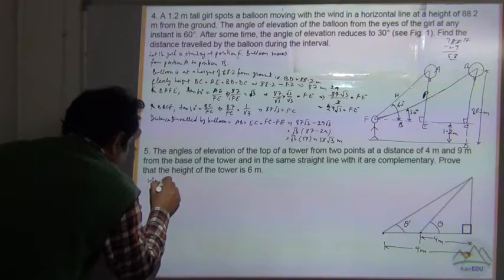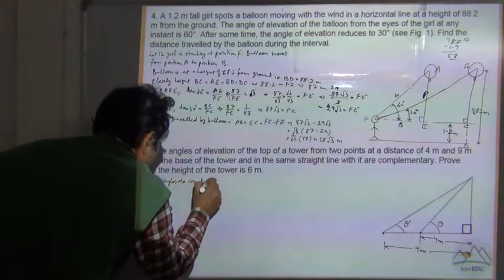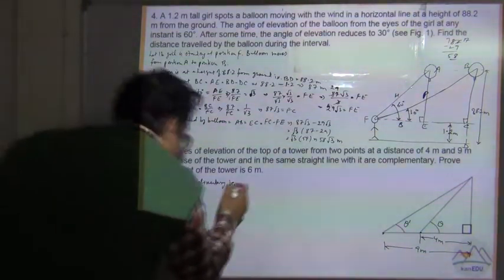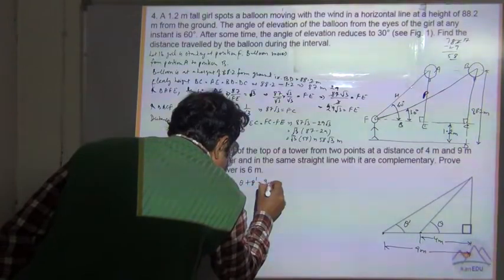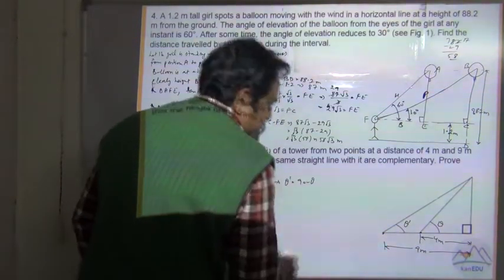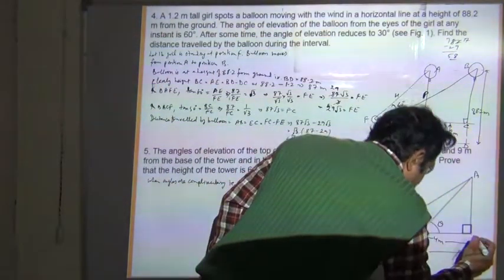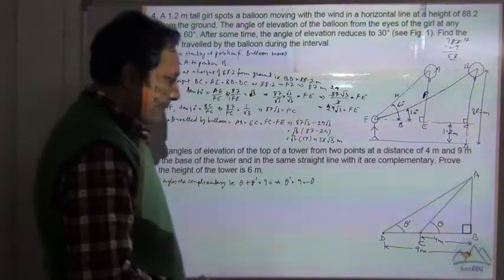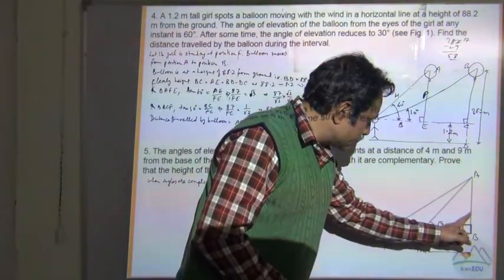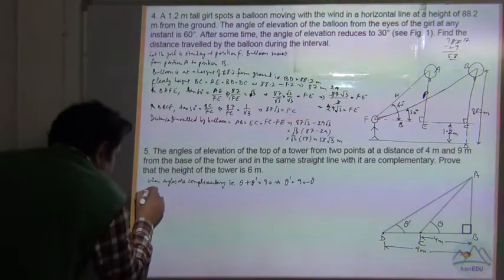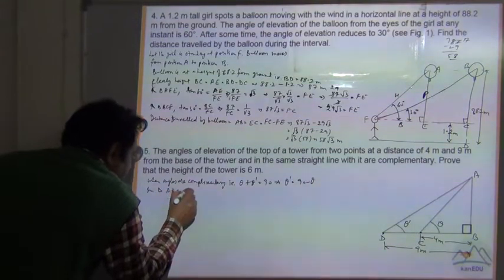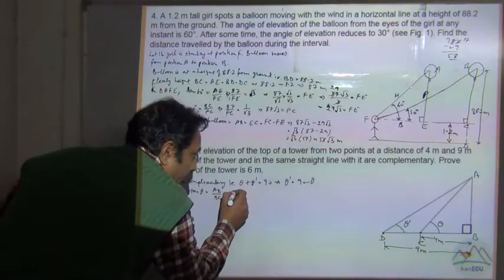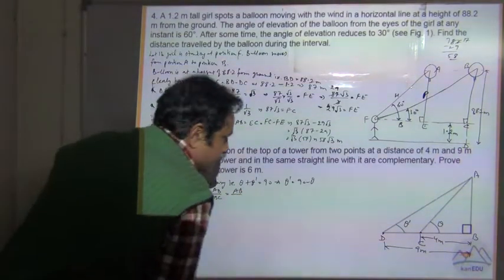When angles are complementary, theta plus theta dash equals 90 degrees, so theta dash equals 90 minus theta. Let's mark the points A, B, C, and D. In triangle ABC, tan theta = AB / BC = AB / 4. This is equation 1.